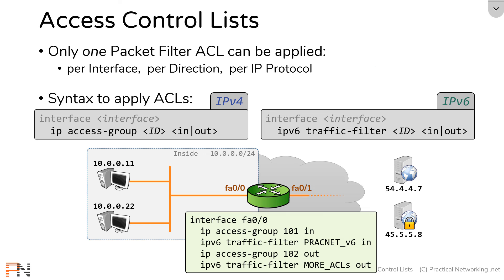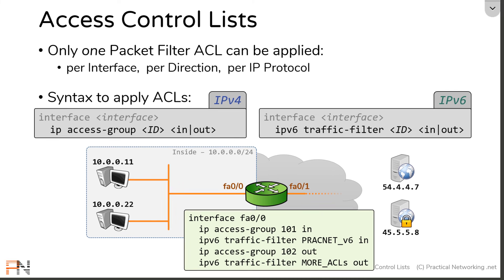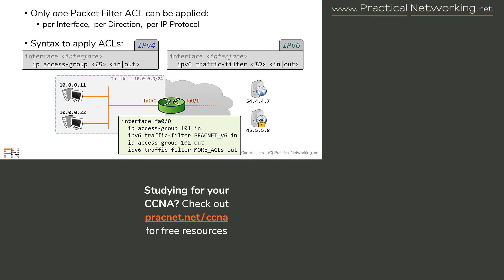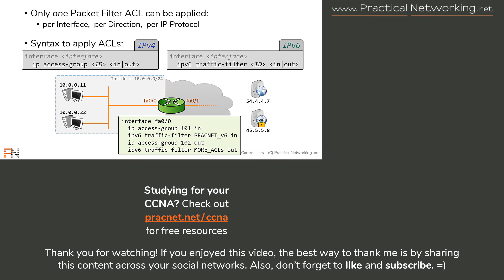And so that wraps up this video discussing how to apply an access list to an interface. In the next video, we'll be answering the age-old question of where should you apply your access list? Specifically, we're going to unpack the ideas of applying an access list closer to the source or closer to the destination. I hope you enjoyed this video. I want to thank you for watching, and I'll see you in the next video where we discuss the best place to apply access lists.